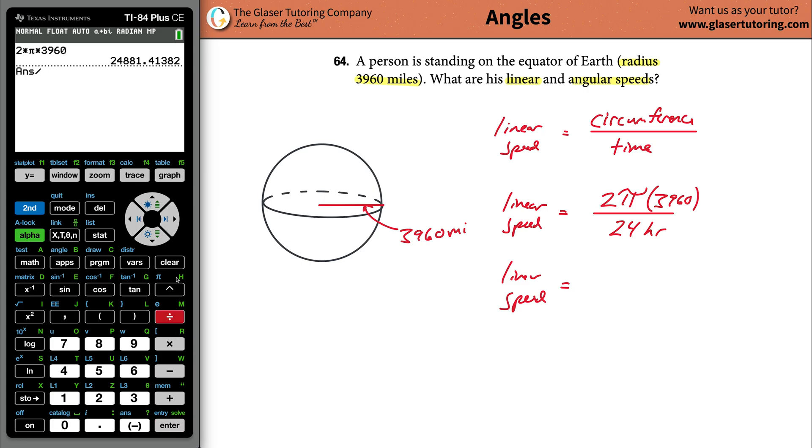And then divide that value by... answer, meaning this answer up here, takes it and plugs it in. Answer, then divide it by 24. And what you're going to find is the linear speed is going to be 1036.7, I can stop it there.